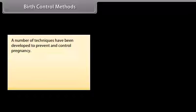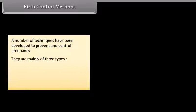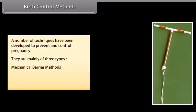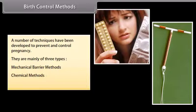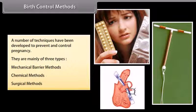Birth control methods: A number of techniques have been developed to prevent and control pregnancy. They are mainly of three types: mechanical barrier methods, chemical methods, and surgical methods.